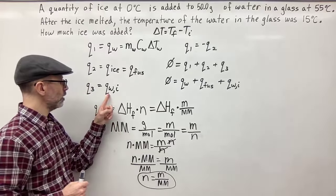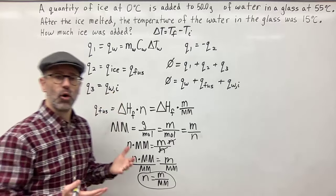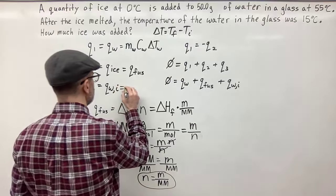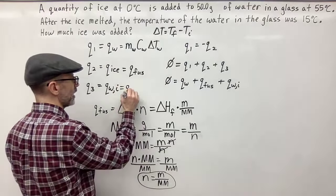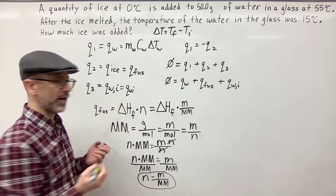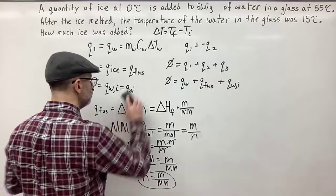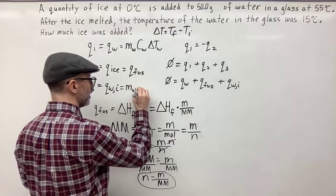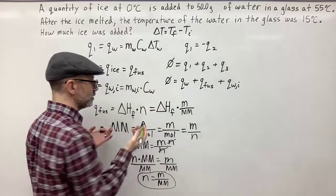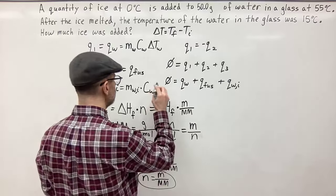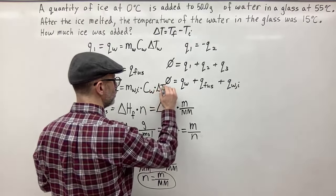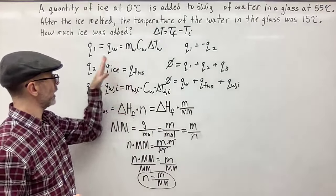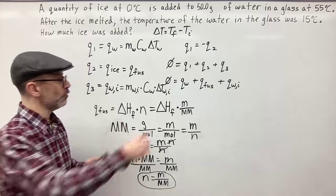The Q of the water that formed from the ice uses Q equals mcΔT again, since it's now in the liquid water phase. So Q of water-from-ice equals the mass of the water from the ice times the specific heat of water times the change in temperature of that water from the ice.